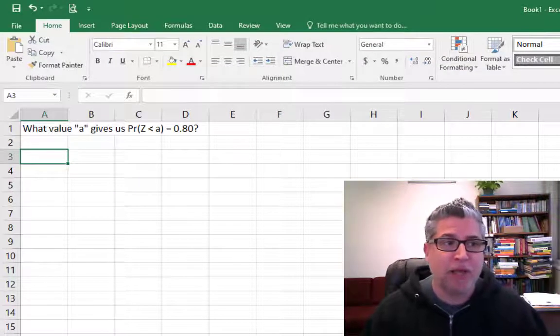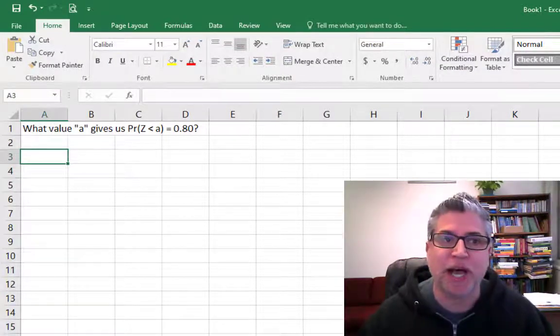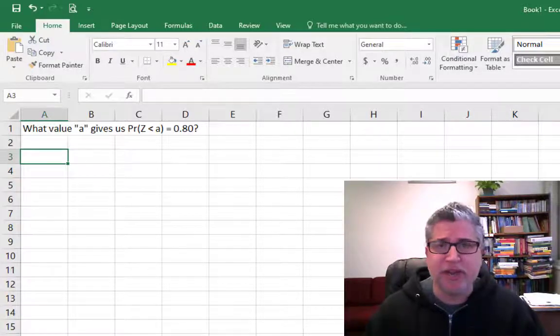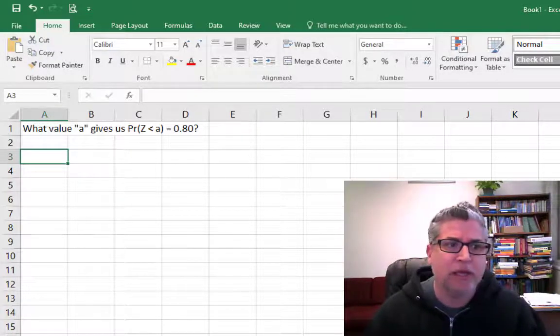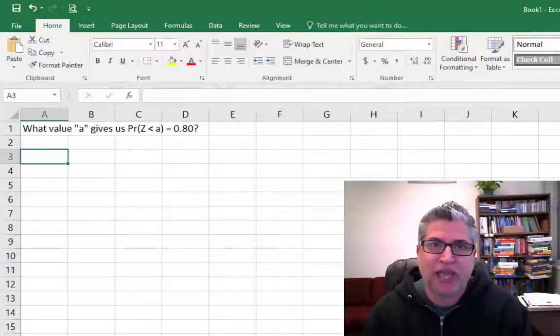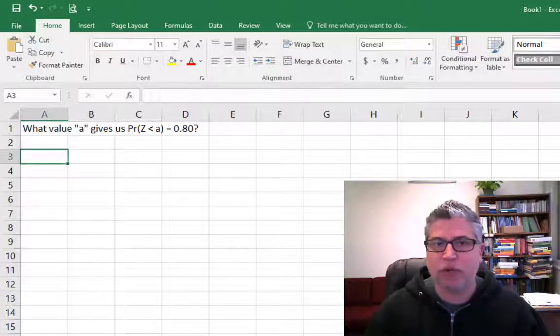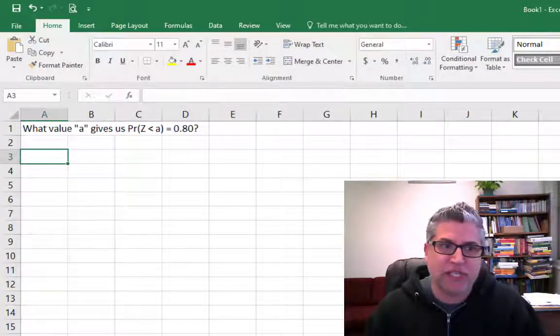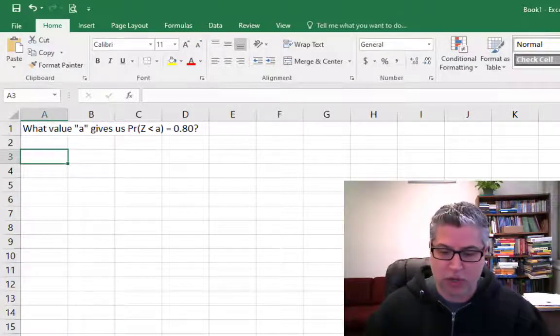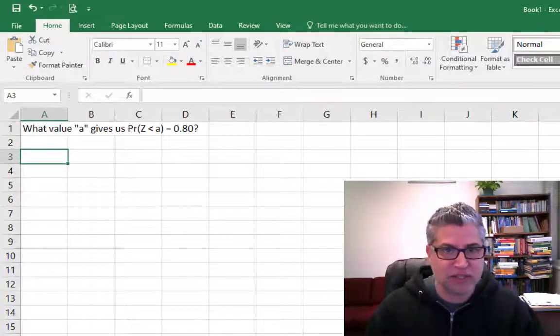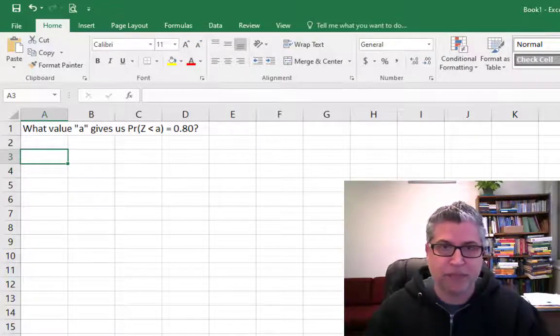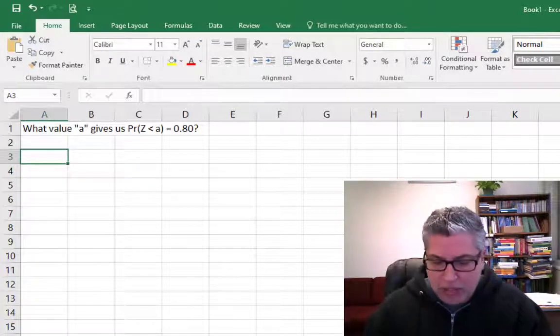Okay, so we've opened up Excel. I've typed in just a reminder in the top left of what our question is, which is, let's find a number, let's call it a, such that the cumulative probability up until a is 80%. Or in other words, out of a standard normal, what value of z gives us the 80th percentile? So rather than trying a whole bunch of different candidate values and trying to triangulate or bracket an answer like we did graphically just now, let's just use Excel.